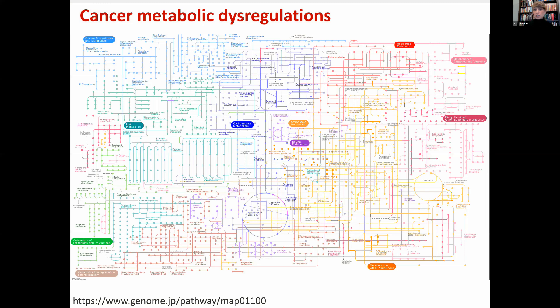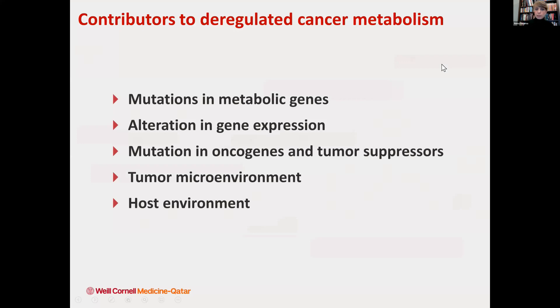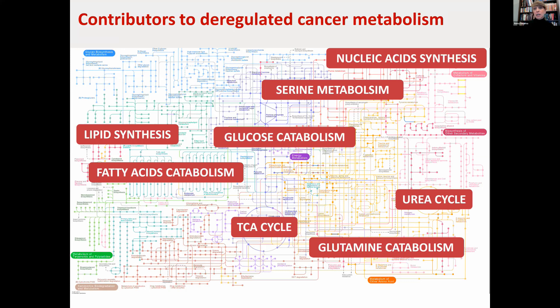What you are seeing here is a simple TCA cycle map, and I would like to highlight some cancer-related metabolic features. One of those features was glucose catabolism, observed by Otto Warburg in the 1920s, who found that cancer cells strongly rely on glucose metabolism and deploy it by generating lactate, in contrast to normal cells. The field evolved and many other pathways have been contributing further to cancer, including nucleic acid synthesis and lipid synthesis, which can be directly linked with the proliferative capacity of cancer cells. Also, the urea cycle and TCA cycle were identified as very important pathways for cancer. And finally, in the latest research, glutamine catabolism was identified as a key target for cancer treatment.